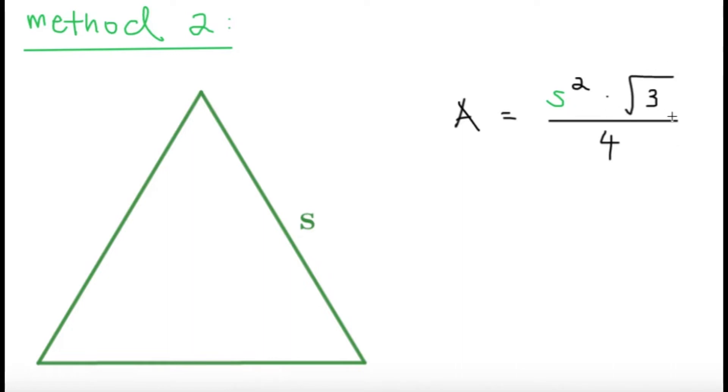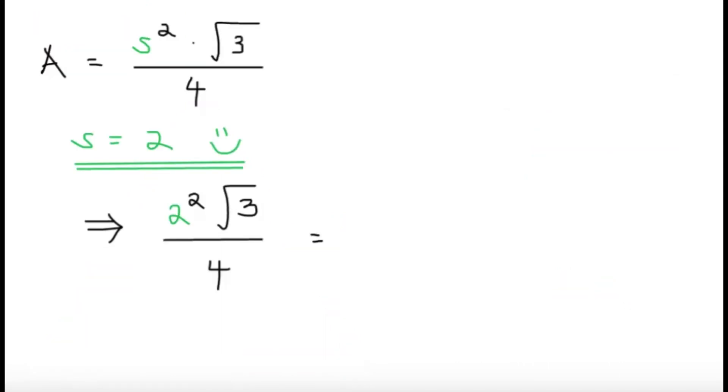So the area is going to be equal to S squared times square root 3 and then divide it by 4. Now since we're dealing with the equilateral triangle in the beginning, which has a side length of 2, let's just assign S equals 2. And let's try to substitute S here as 2. So if we try to do that, we're going to get that side squared. So S squared becomes 2 squared and then times square root 3 and then divide it by 4.